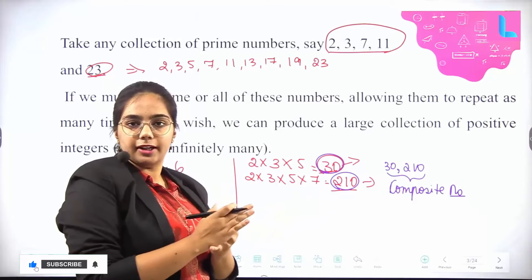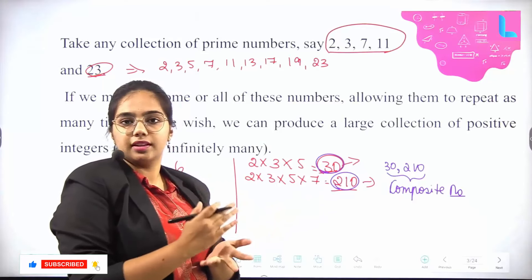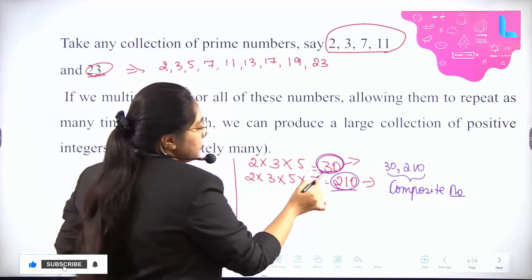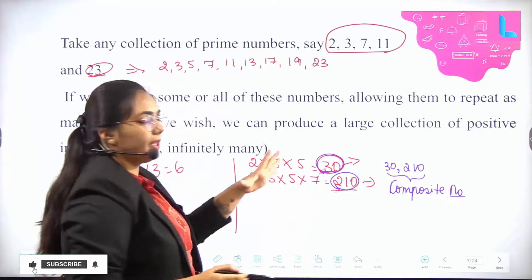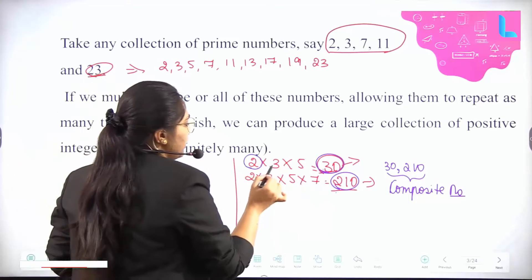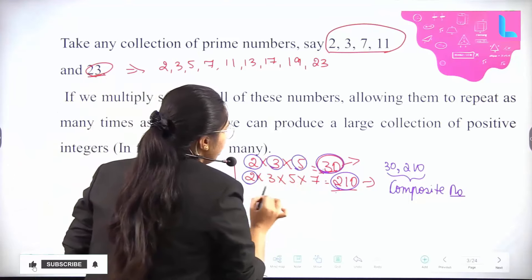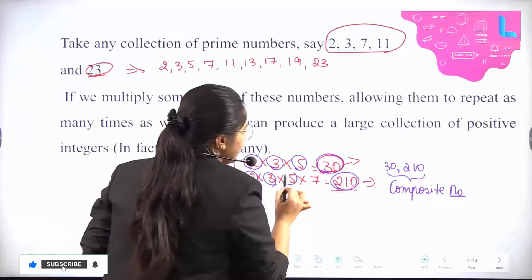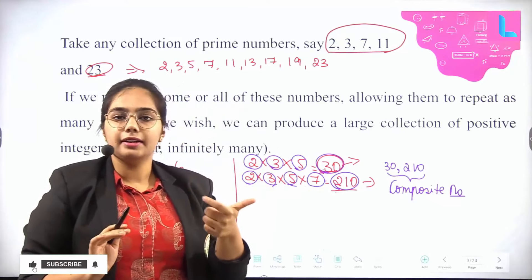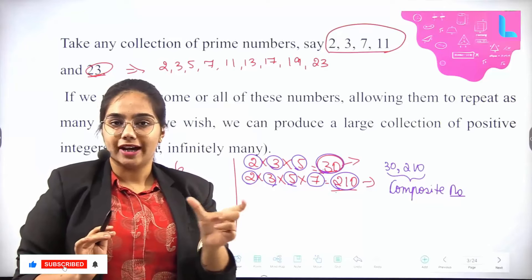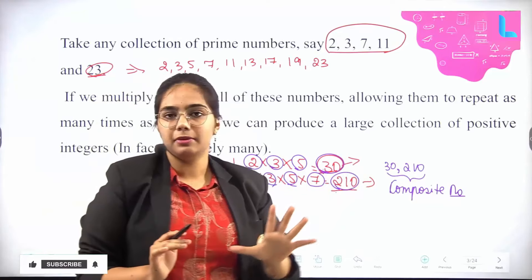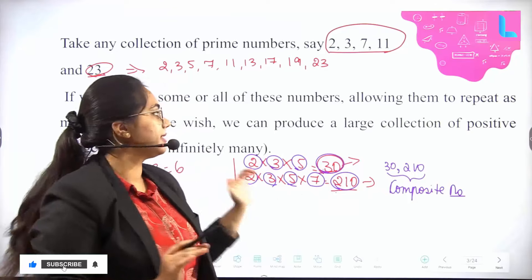If we take the product of these prime numbers, there are infinite ways we can get an answer — there is no finite limit to the number of factors you will get. If we multiply all these prime numbers together, you will be getting infinitely many numbers.